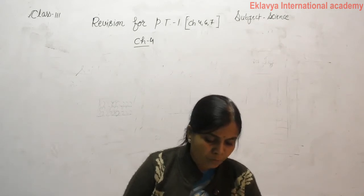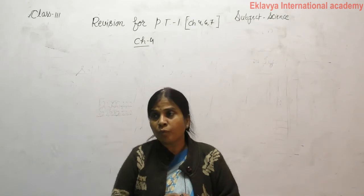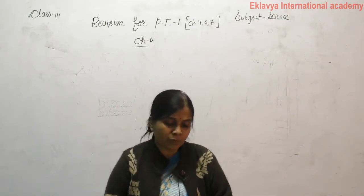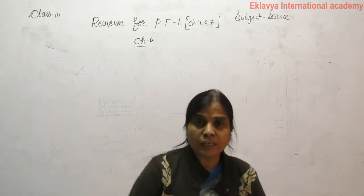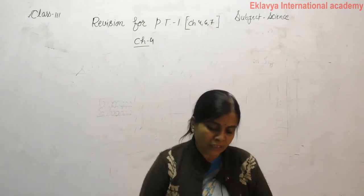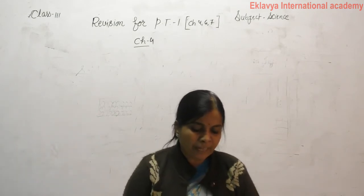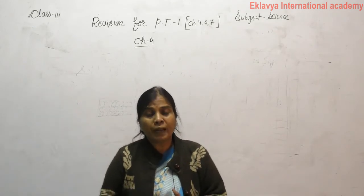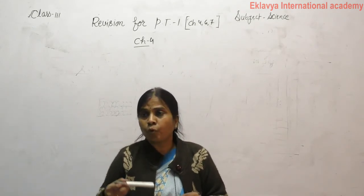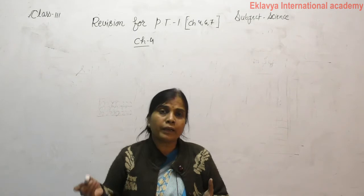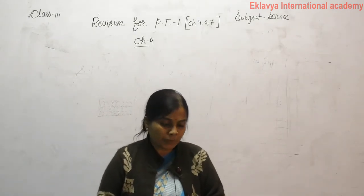An example of a wild omnivorous animal — the options are bear, wolf, deer and giraffe. The correct option is bear. Bear is the correct option. All animals depend directly or indirectly on plants for their food.